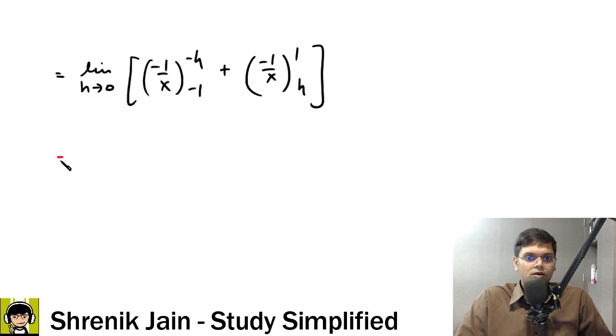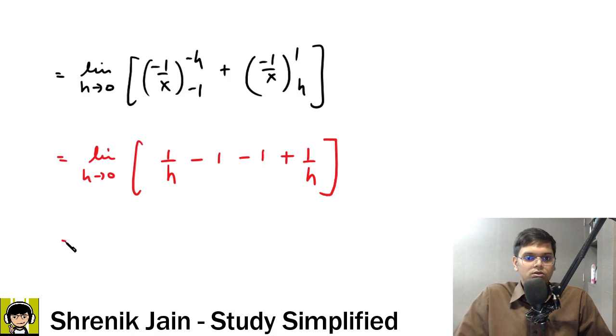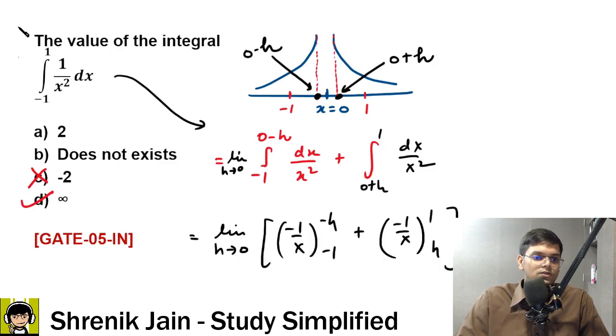Upper limit, if you put, then see limit h tends to 0, upper limit is giving you 1 by h, correct. Then minus lower limit, so minus lower limit will give me -1 and minus lower limit will give me positive 1 by h. So I was like, aha, so now this is 1 by 0 minus 2 plus 1 by 0, which is infinity minus 2, which is infinity. Infinity is the answer. Answer is not.